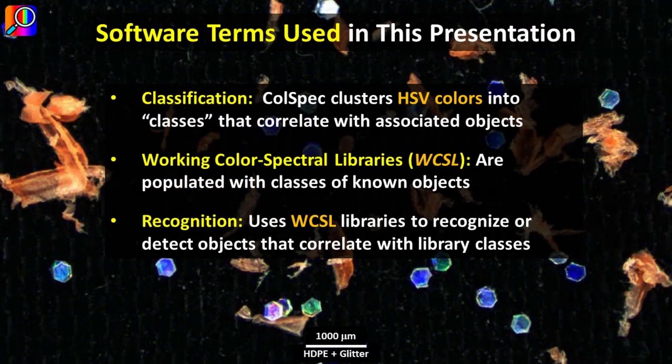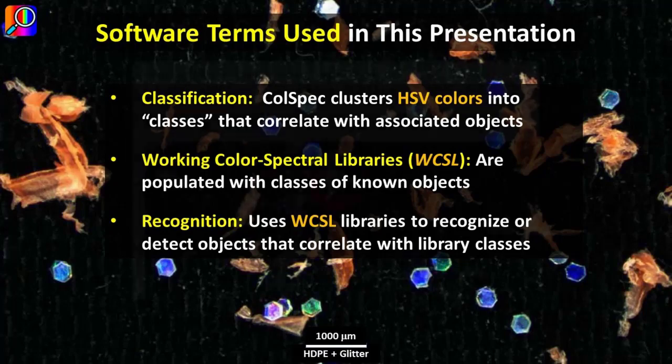Terms used in this presentation include: classification — Kohlspec software clusters HSV colors into classes; working color spectral libraries — libraries populated with classes of known objects; and recognition — uses libraries to recognize objects that correlate with library classes.